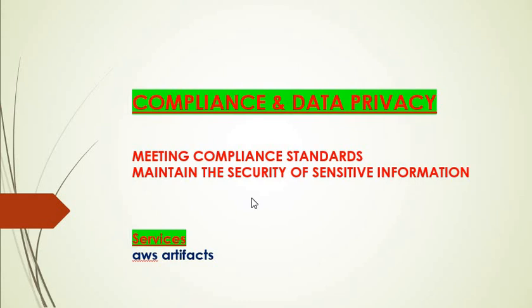The last category is compliance and data privacy. If you come under PCI DSS or other compliance frameworks, these services maintain the security of sensitive information, track who logged into your AWS account and EC2 instances, and ensure you are meeting compliance standards. These services require you to understand what regulations apply to your data. The major service here is AWS Artifacts.